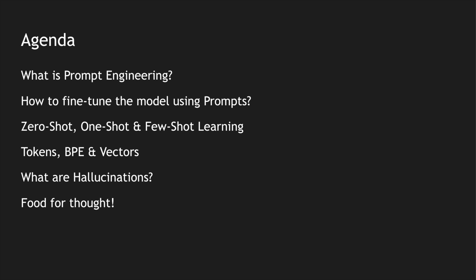There are also concepts like tokens, byte pair encodings, and vectors — we will briefly touch upon those because to understand AI and the further videos we need to know these terms. There is also something called hallucinations in AI. We will look at what those are, and then I will end the video with a food for thought so we can discuss in the comment section.